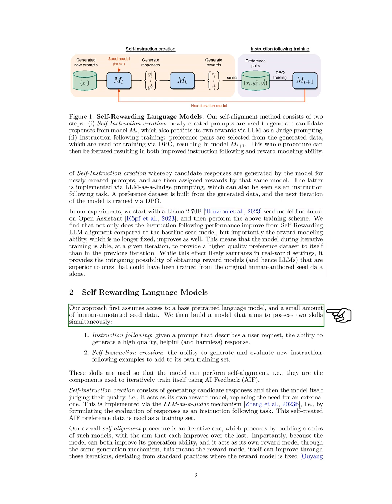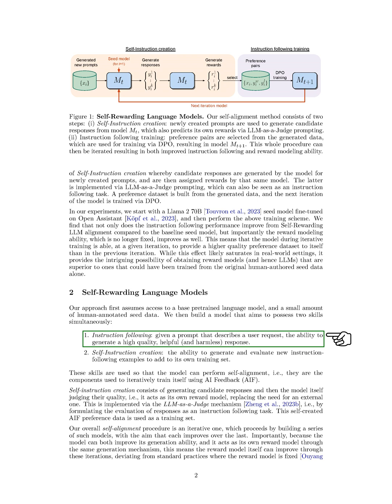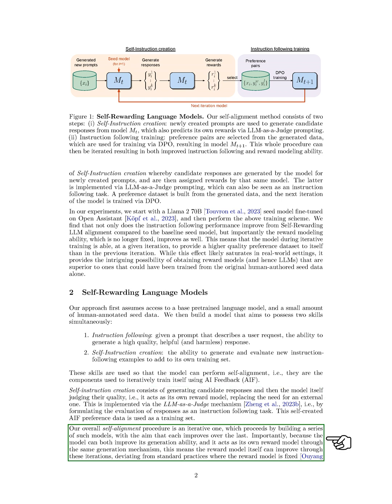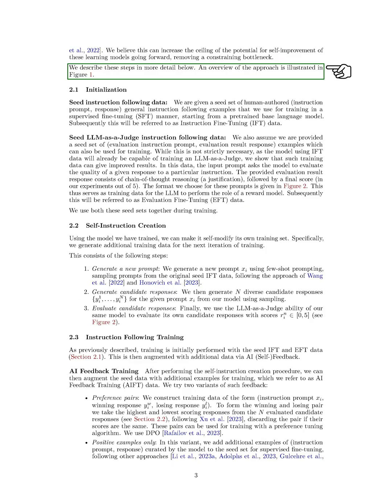Our approach starts with a base pre-trained language model and a small amount of human-annotated seed data. We aim to build a model that can do two things at once: generate a high-quality response to a user request and create new instruction following examples to add to its own training set. The model generates candidate responses and then judges their quality, acting as its own reward model. This eliminates the need for an external reward model. The self-created preference data is used as a training set. Our self-alignment procedure is iterative, with the goal of each model improving over the last. Because the model can improve its generation ability and act as its own reward model, the reward model itself can improve through these iterations. This deviates from standard practices where the reward model is fixed, removing a constraining bottleneck.